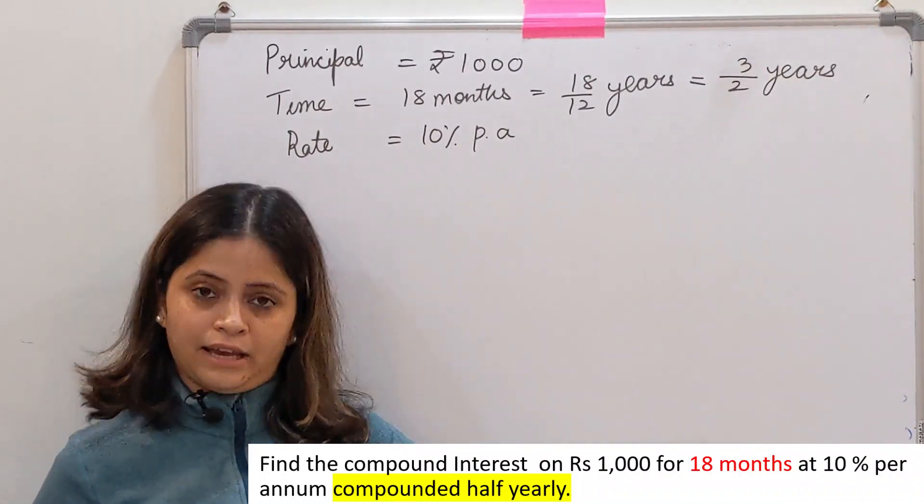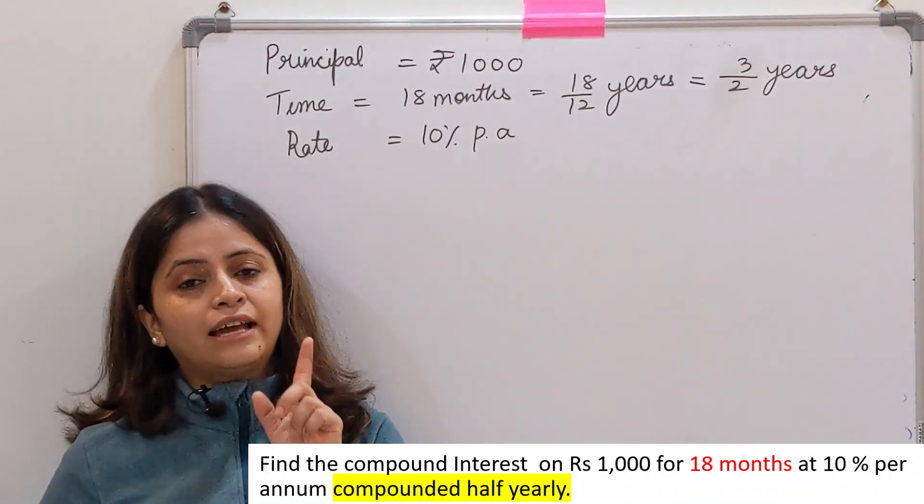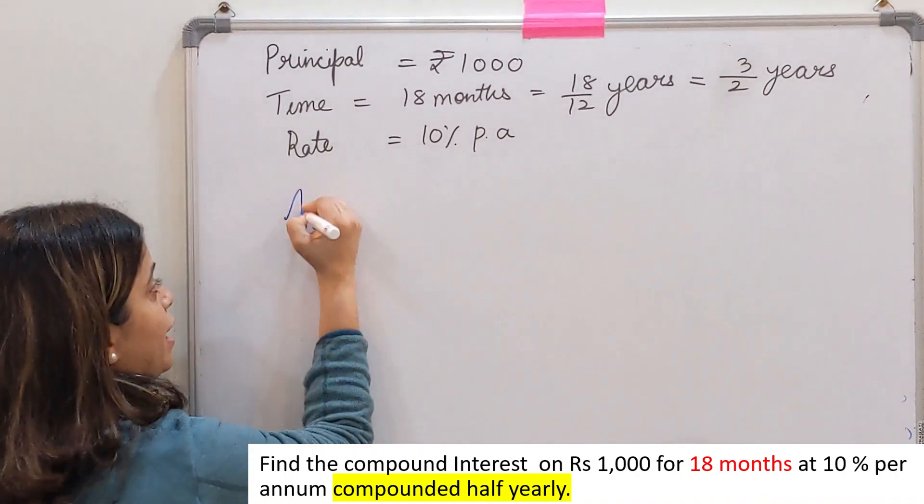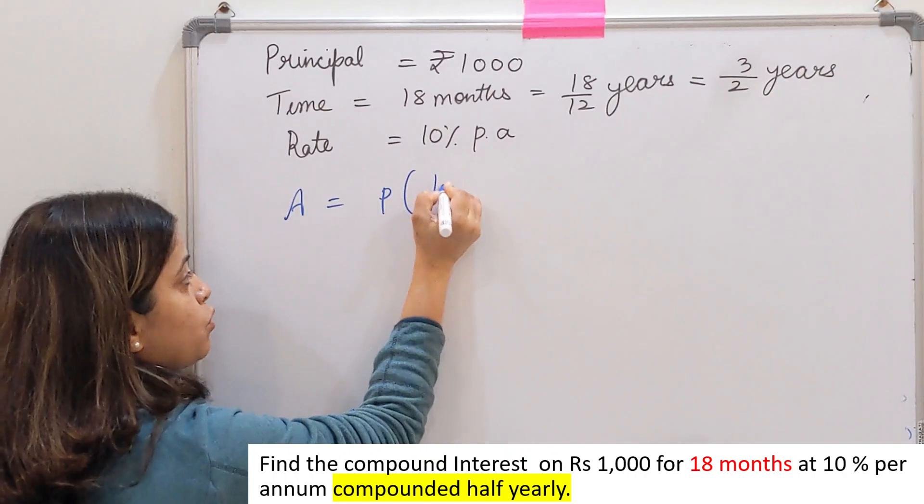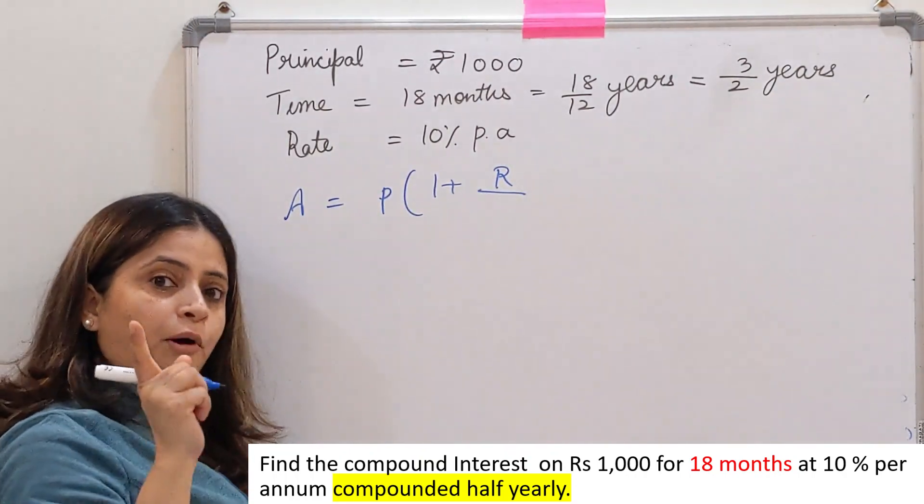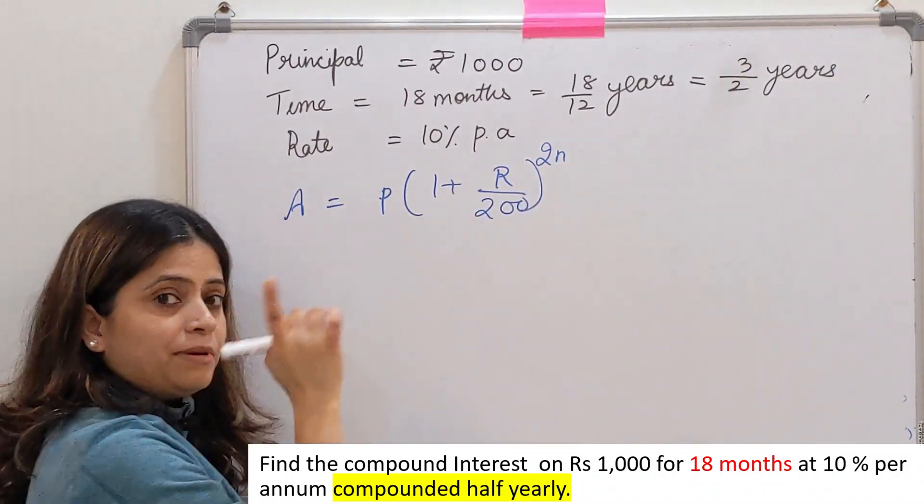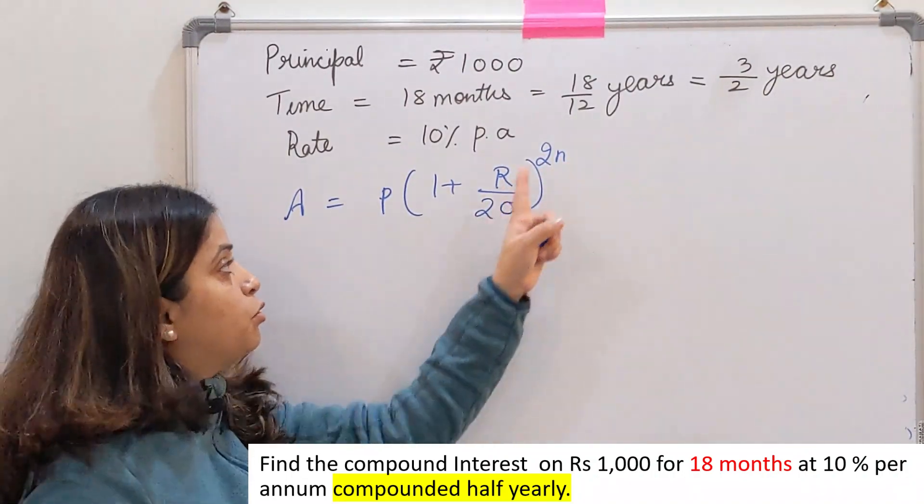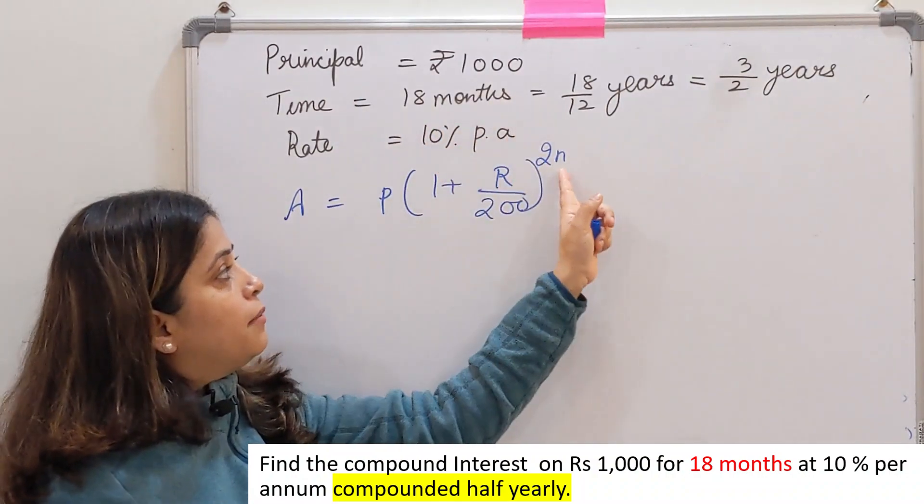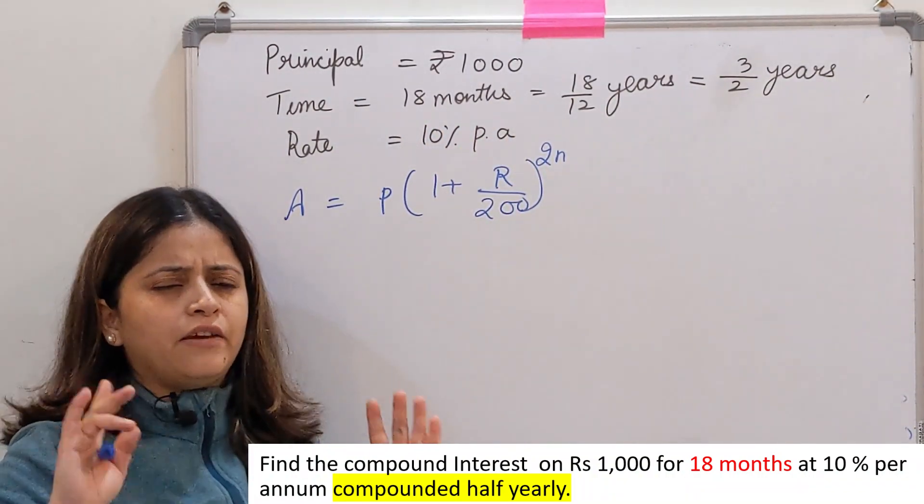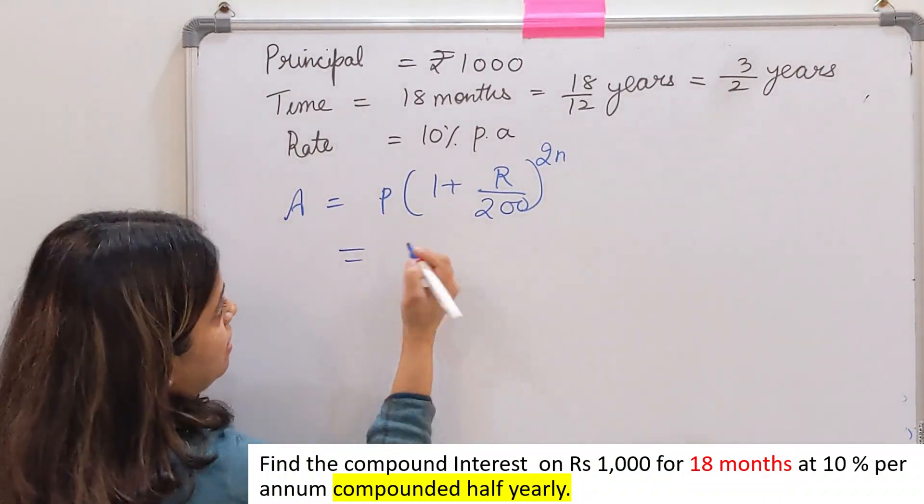यहां find करना है compound interest. Either you use the formula directly or you can find the amount which is P into 1 plus R upon - because the interest is compounded half-yearly - formula बन जाएगा 200 power 2N. I hope यह clear है इतना. पता होना है कि 2, 2 आ रहा है. R मेरा per annum है और N is time in years. Very, very important step.